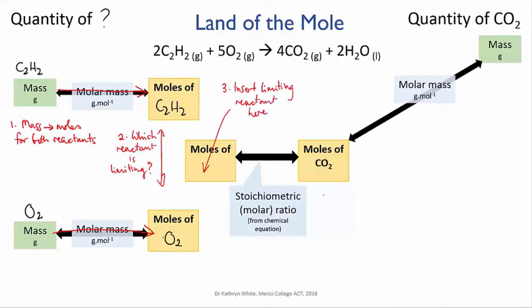You take the moles of the limiting reactant and you apply the mole ratio to calculate the moles of product formed and finally you do a mass mole conversion to convert the moles of product to a mass of product.